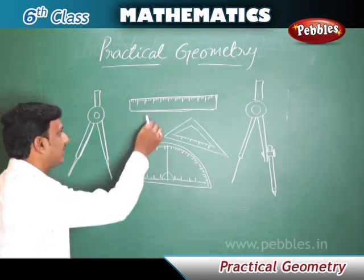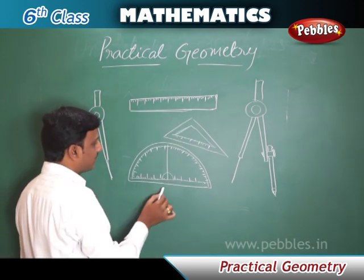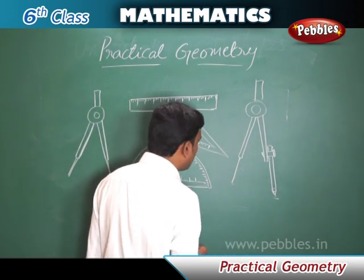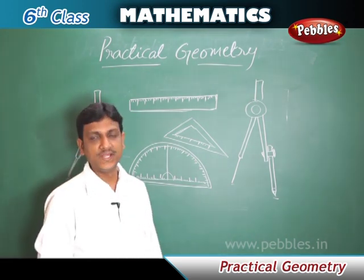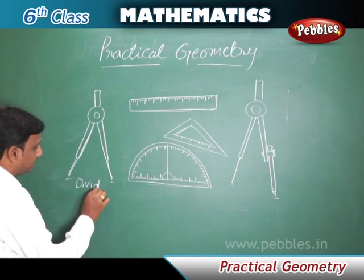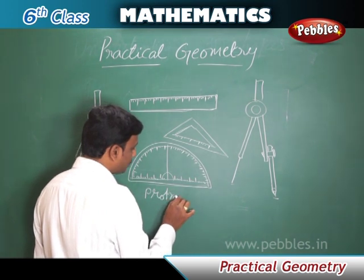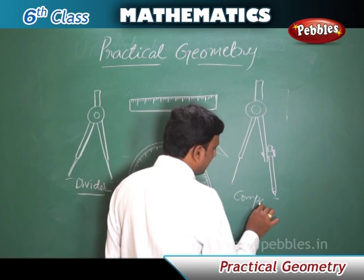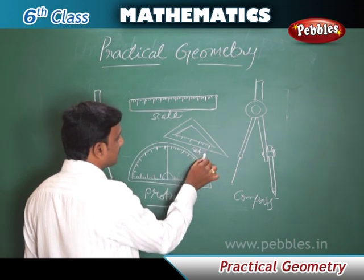The geometrical box contains all these instruments which let you draw a geometrical figure with accurate sizes and angles. In the box we have: a graduated measuring scale, a set square, a protractor, a compass, and a divider. Using these, we can draw geometrical shapes.